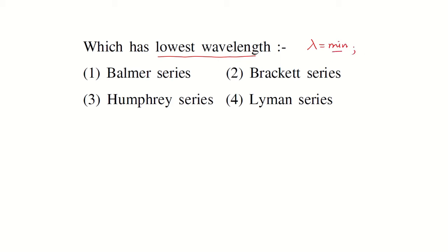Now you know it becomes minimum when the value of 1 by lambda is maximum. We know the formula: 1 divided by lambda equals Rydberg constant R_H into 1 divided by n1 square minus 1 divided by n2 square.